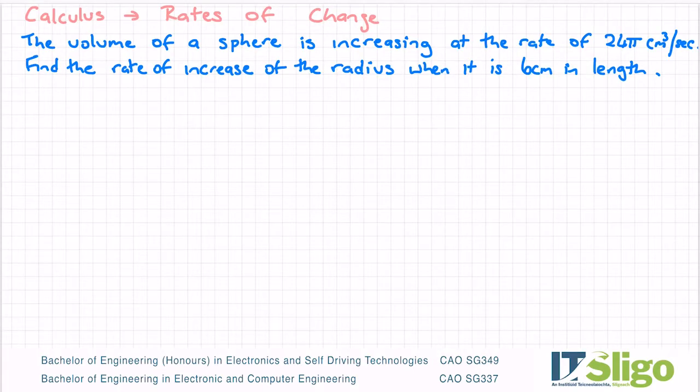Right, another request from a student looking at the rates of change section of calculus, which in my opinion is probably the harder section. It's right at the end of the applications of calculus. This question reads: the volume of a sphere is increasing at a rate of 24π cm³ per second. Find the rate of increase of the radius when it is 6 cm in length.